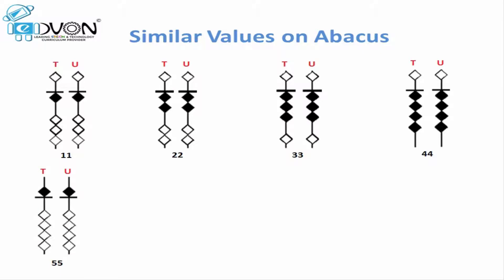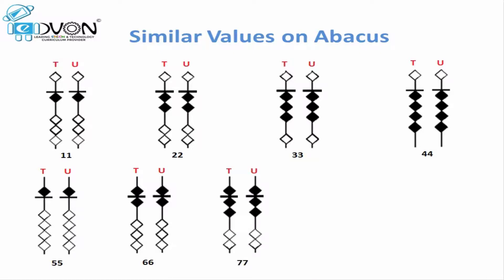For 55, we will move the upper beat down to touch the calculation bar on tens rod and units rod. For 66, upper beat down and one lower beat up to touch the calculation bar on both the rods. For 77, upper beat down and two lower beats up to touch the calculation bar.